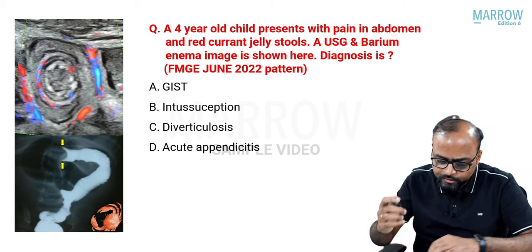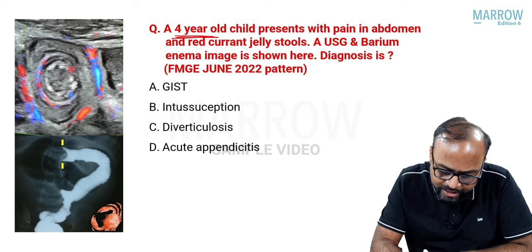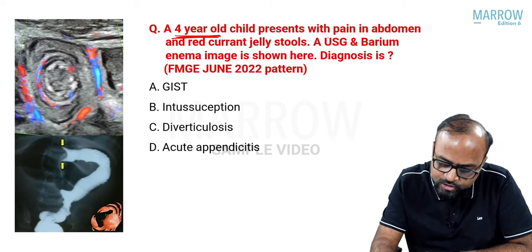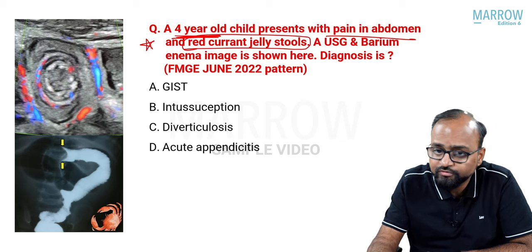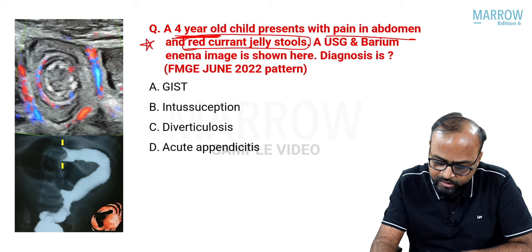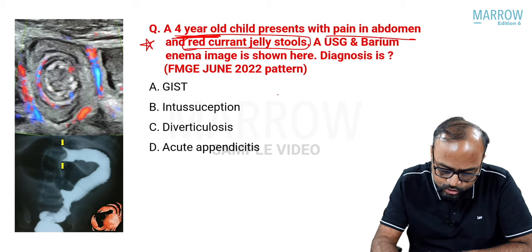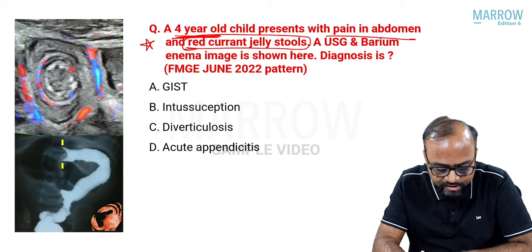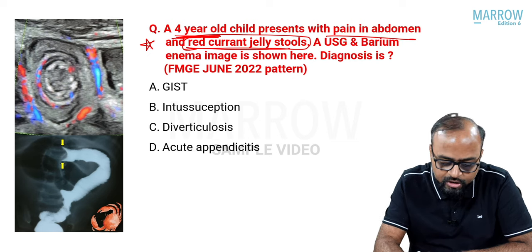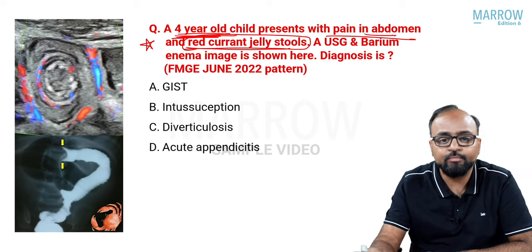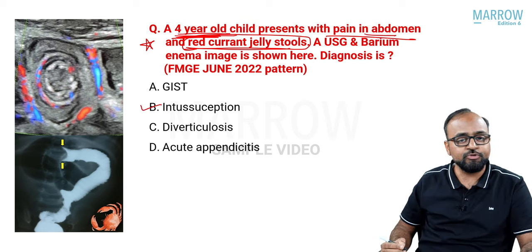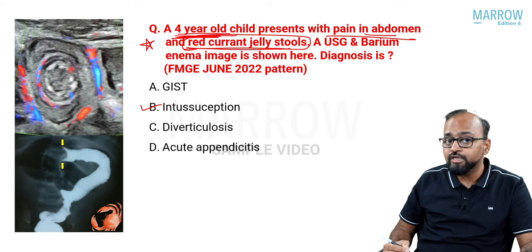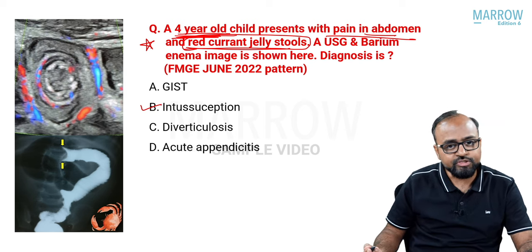A four-year-old child presents with pain in abdomen and red currant jelly stools — a peculiar feature. USG and barium enema image are shown. Red currant jelly stools in a child with abdominal pain suggests intussusception.